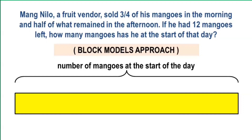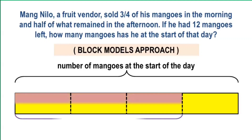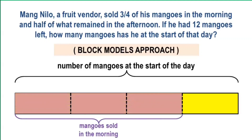In order to show this, we divide the whole block into four equal parts. Then we shade three parts out of four, which would represent the mangoes sold in the morning. It means that only one-fourth of the mangoes remained.